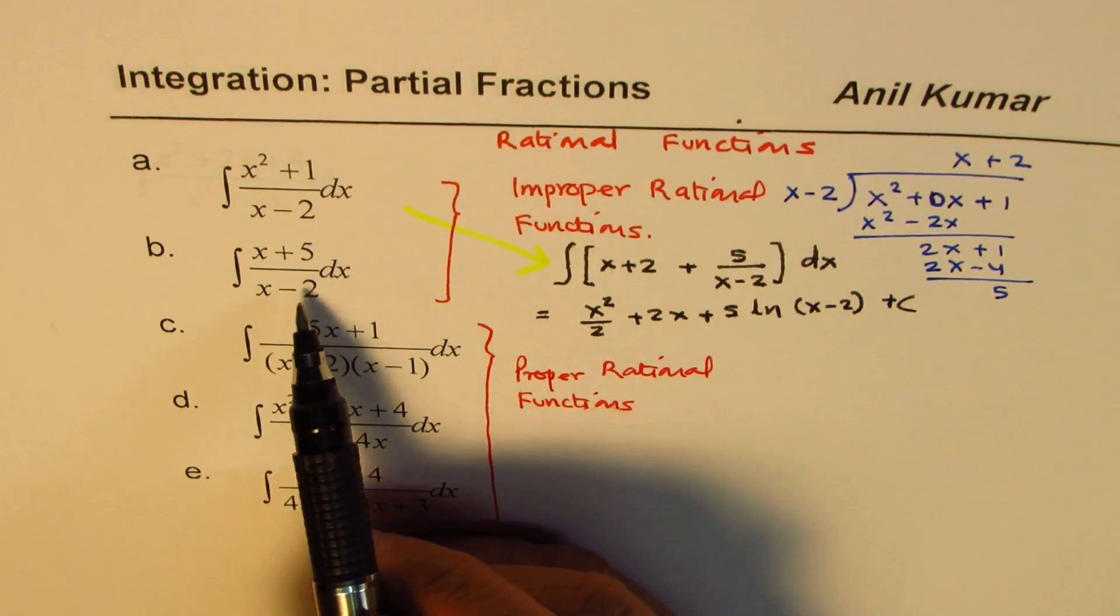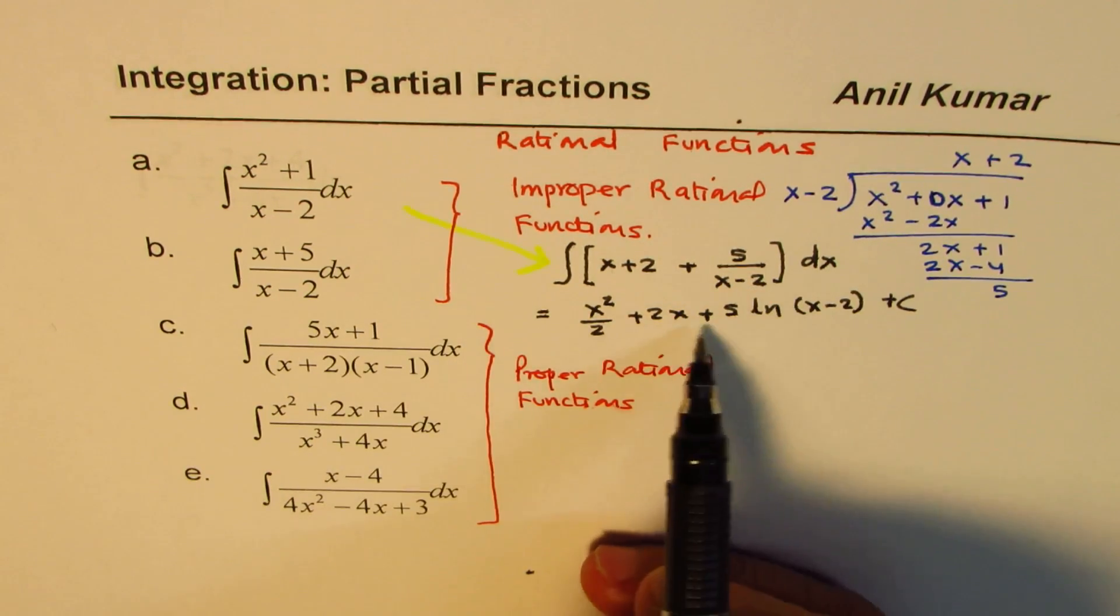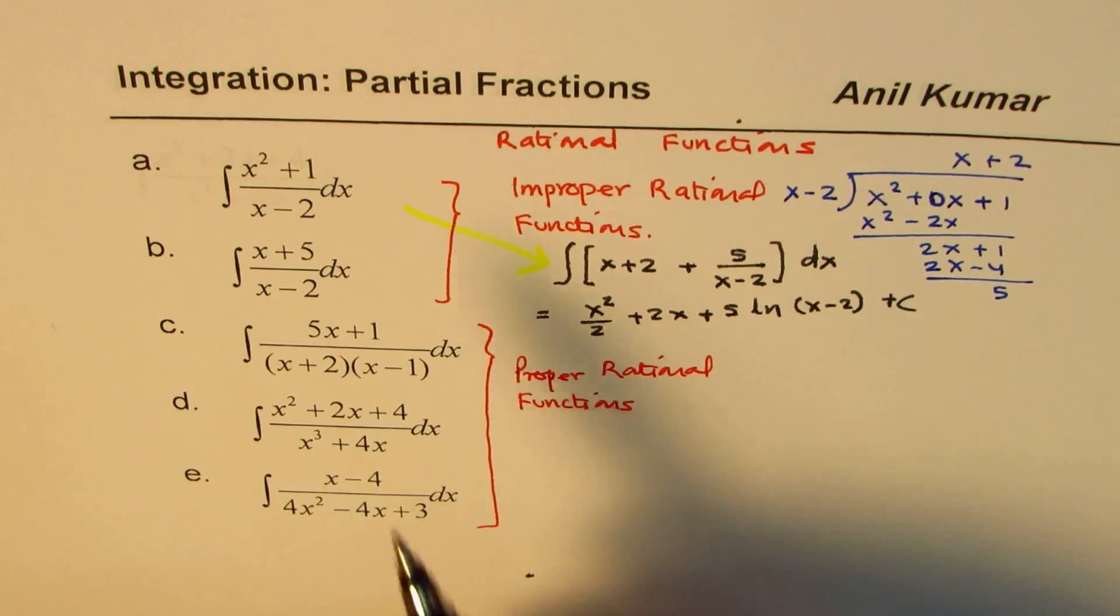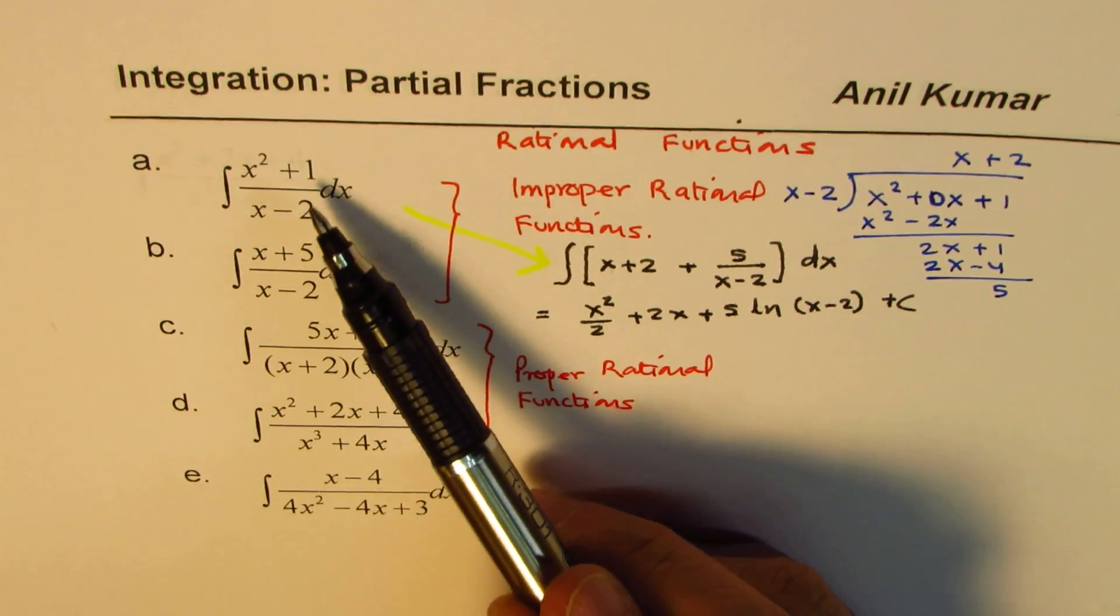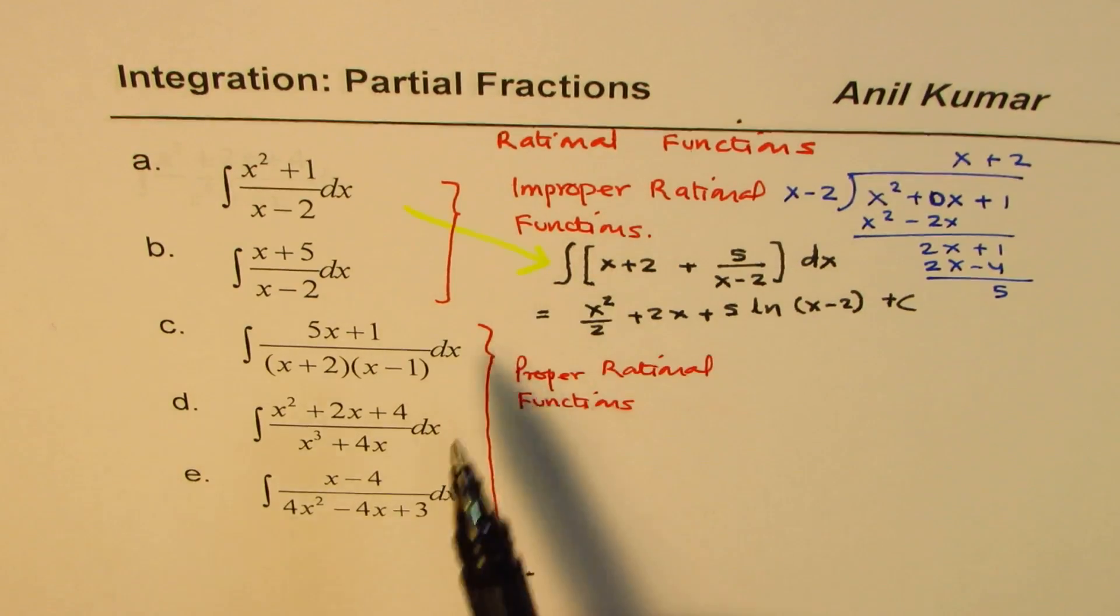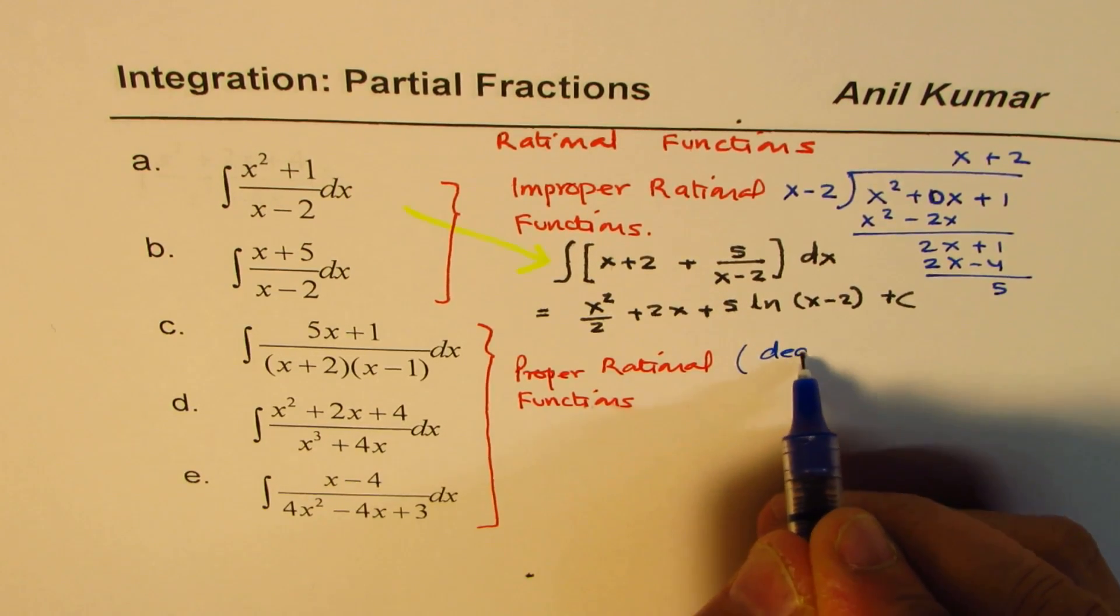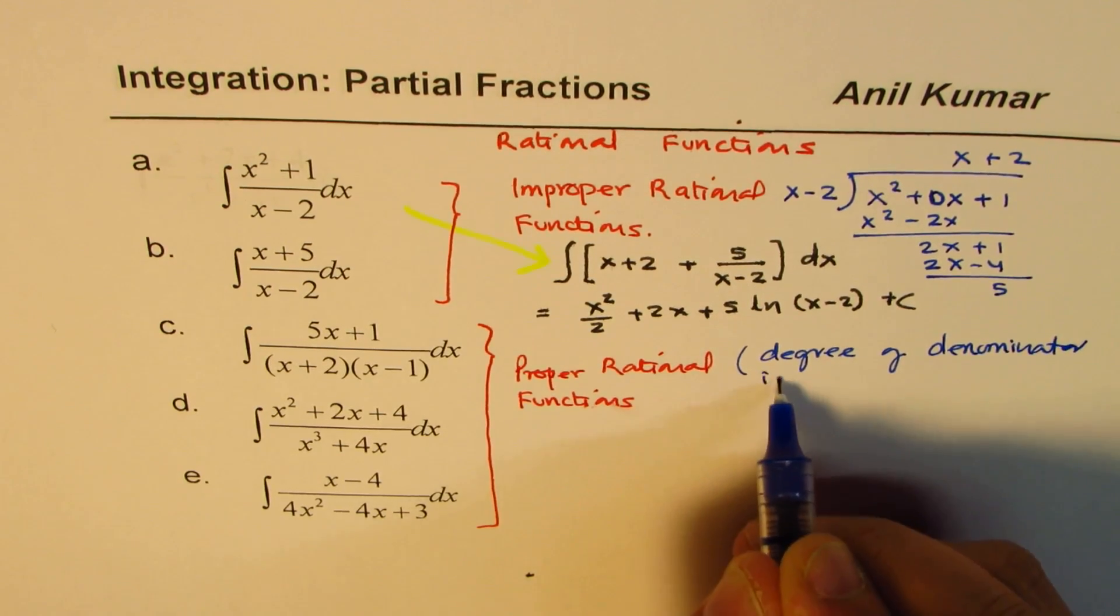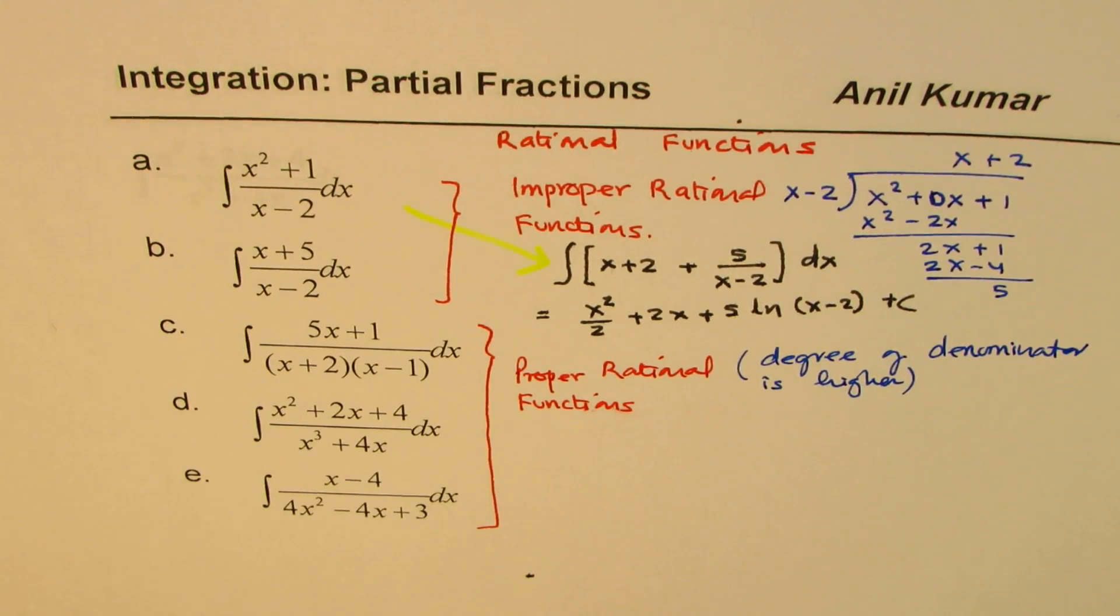So you could do this example also, just divide x plus five by x minus two, and then you get some function like this, and similar result you will get for that one. So whenever the degree is higher or same, that means not lower, we call those as improper rational functions. I'm sorry, they're not proper rational functions. Now, proper rational functions are those fractions where degree of denominator is higher.